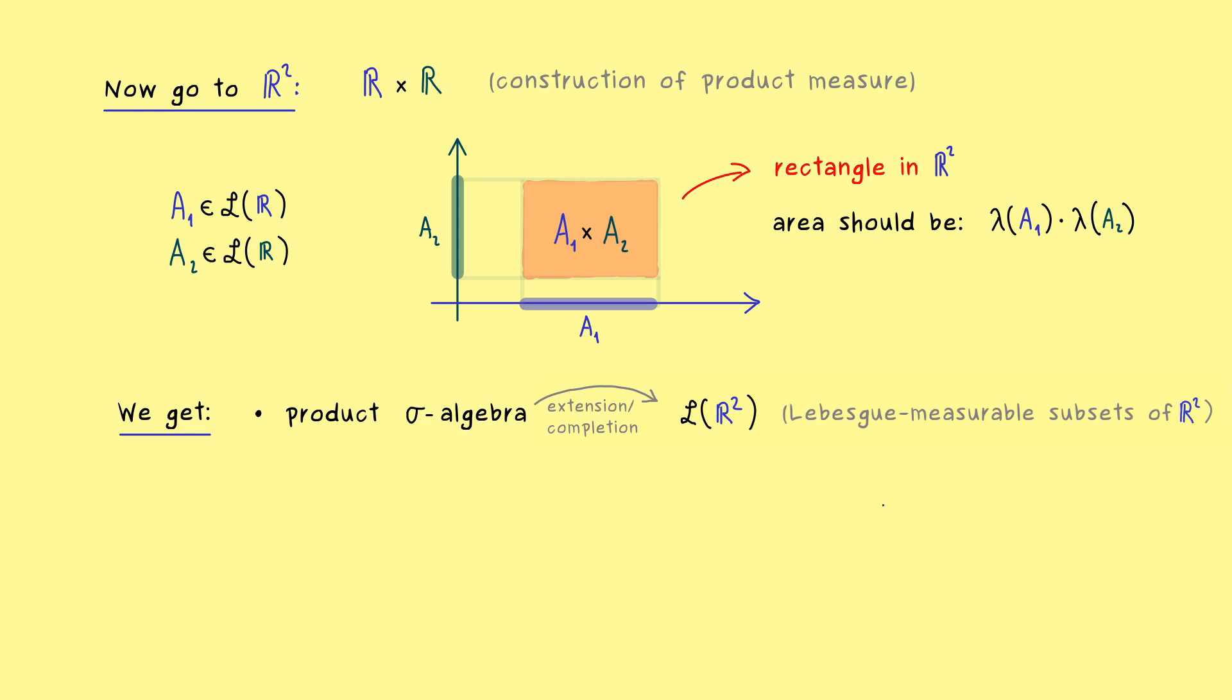And now the common name we choose for this sigma algebra is just curved L of R2. So in fact, these are the so-called Lebesgue measurable subsets of R2. And as before, this is a really large sigma algebra and it's the domain for our Lebesgue measure.